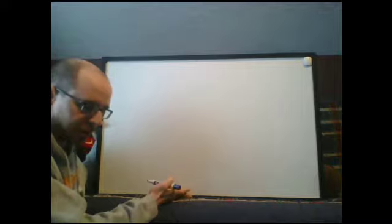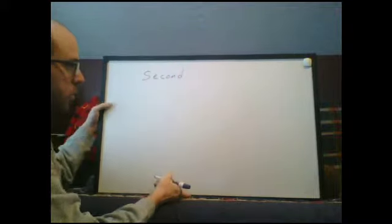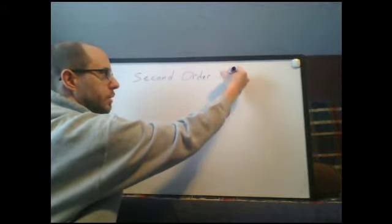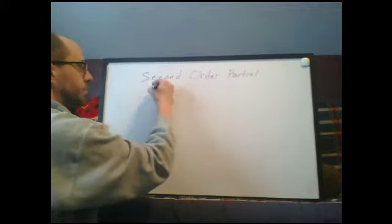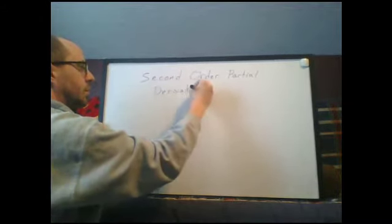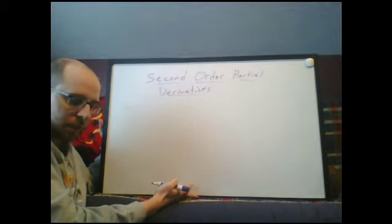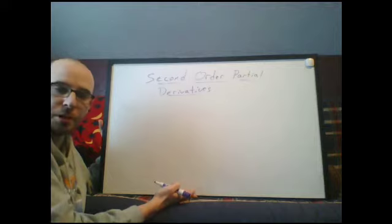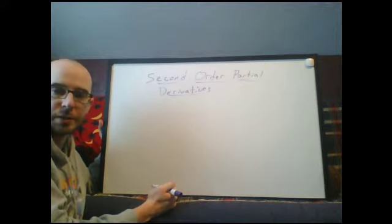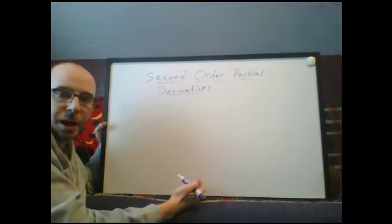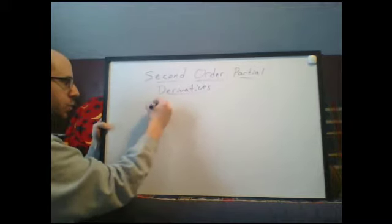Let's talk now about second-order partial derivatives. These are like second derivatives, but we're dealing with functions of more than one variable. With more than one input variable, there are multiple types of derivatives we can take. So if we take a second derivative, there are multiple combinations possible. Let's focus on a two-variable function.